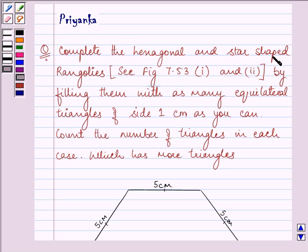complete the hexagonal and star-shaped Rangolis, see figure 7.53 first and second, that would be downstairs,